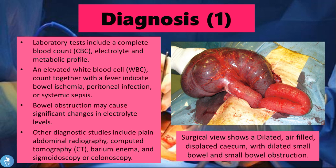For diagnosis, lab tests including a complete blood count (CBC), electrolyte, and metabolic profiles can be helpful. An elevated white blood cell count together with fever indicates bowel ischemia, peritoneal infection, or systemic sepsis. Bowel obstruction may cause significant changes in electrolyte levels. Other diagnostic studies include plain abdominal radiography, CT, barium enema, sigmoidoscopy, or colonoscopy. A surgical view image shows a dilated air-filled displaced cecum with dilated small bowel and small bowel obstruction.